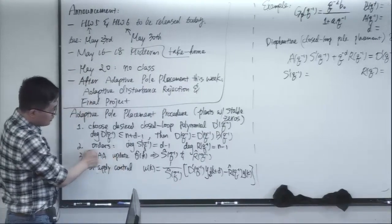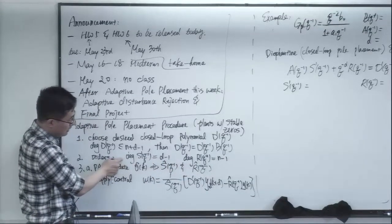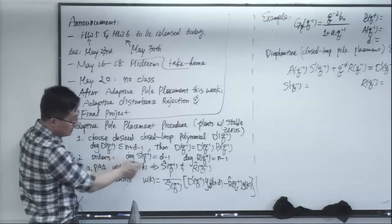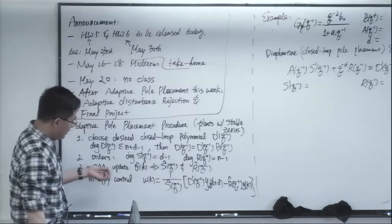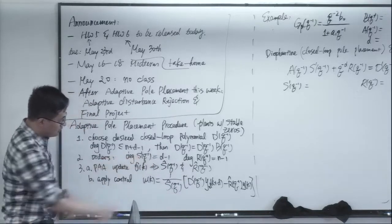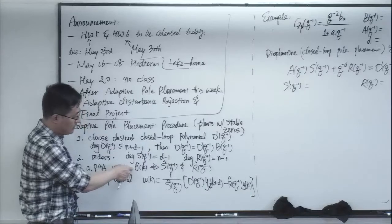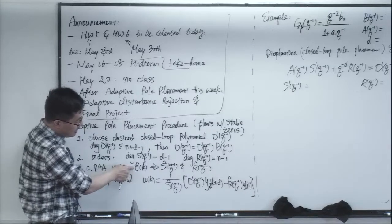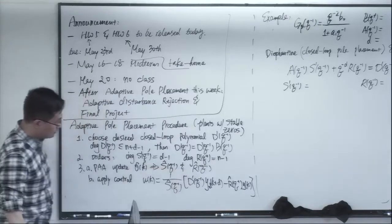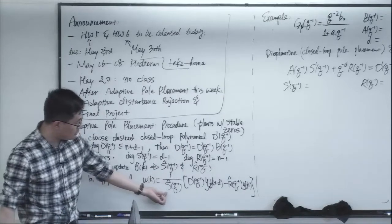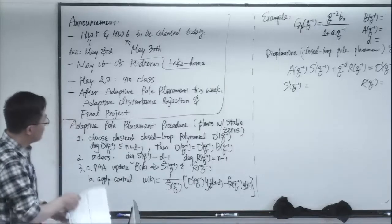Then the orders of the controllers will be immediately available for pole placement, again coming from the Diophantine equation. Order of s prime is d minus 1, and order of r is n minus 1. After you know the orders, you know the dimension of the theta vector, and then you can apply adaptation for the theta vector. The theta vector contains the coefficients of s hat and r hat. After this step, you will be able to implement the control law. That's the overall recipe.